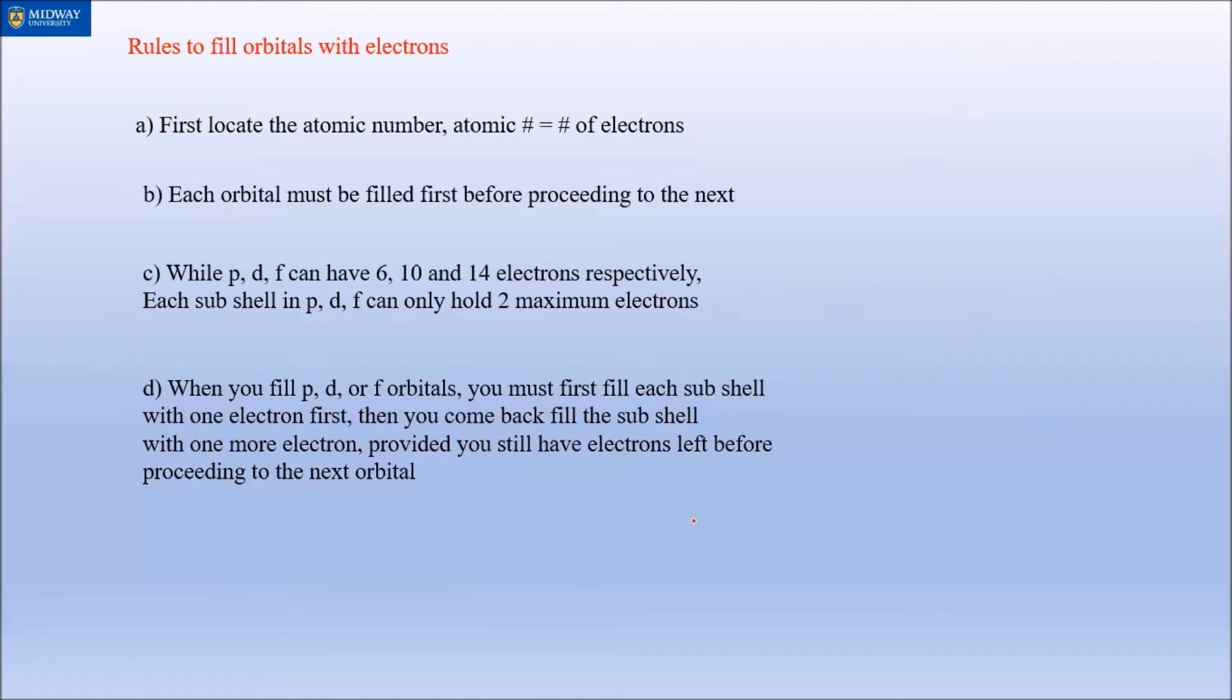Each orbital - what I meant by each orbital is each shell within the orbital - must be filled before proceeding to the next. Each shell can hold a maximum of two. This is the most important rule that distinguishes boxed from free flow: you must fill each subshell with one electron first, and then you come back and fill the subshell with one more electron or however many is left before proceeding to the next orbital.